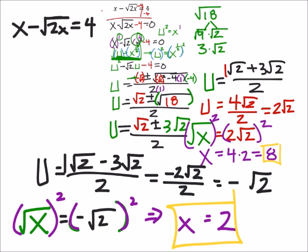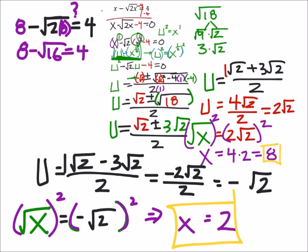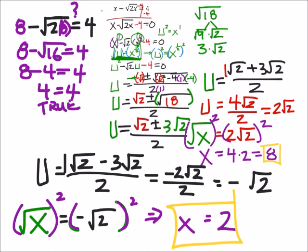Let's start with x = 8 and see what we get. I'm going to replace x with 8. So I've got 2 times 8 and then 8 minus that — so that would be 8 minus the square root of 16, and this needs to equal 4. The square root of 16 is 4, and 8 minus 4 is 4 — that's true. So we know that 8 is a correct answer.